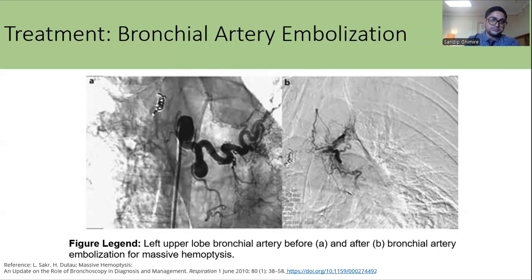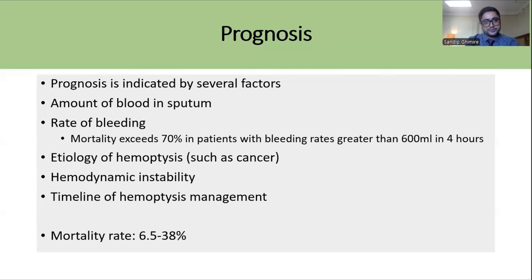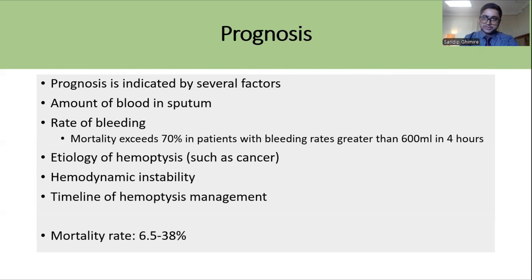A picture shows the bronchial artery before and after embolization in a patient with massive hemoptysis, and a summary management chart is provided. Regarding prognosis, it is influenced by the amount of blood in the sputum — larger amounts indicate a worse prognosis. The rate of bleeding is also important; mortality exceeds 70% in patients bleeding at more than 600 ml in 4 hours. The etiology matters as well — hemoptysis due to underlying cancer carries a poor prognosis. Hemodynamic instability and delayed management also worsen outcomes. The mortality rate in recent studies is approximately 6.5 to 38%.